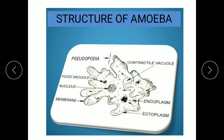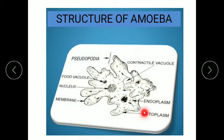The cell membrane of amoeba is flexible and allows it to change its shape, so amoeba is irregular in shape. There are two types of cytoplasm in amoeba: ectoplasm, which is near the surface near the cell membrane, and endoplasm, which is present towards the interior of amoeba.